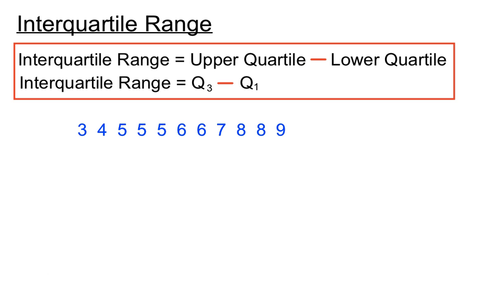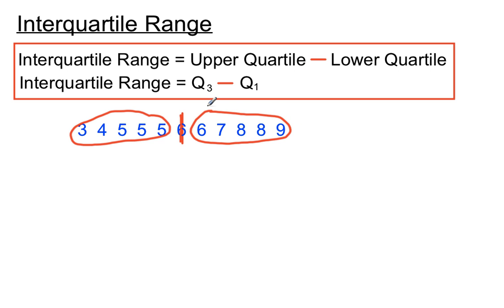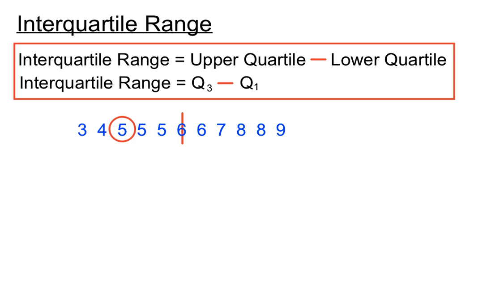Let's look at another example to consolidate our learning. We've got a bunch of scores, and in this case we have an odd number of scores. So our median line actually takes that middle score out of consideration, and then we concentrate on the first half and the second half. When we've got a single middle score, we eliminate that and concentrate on the left-hand and right-hand sides. The middle of the left-hand side is 5, so we call that Q1.